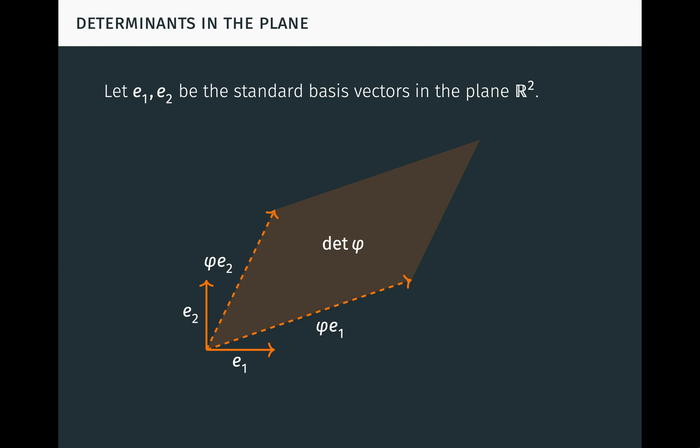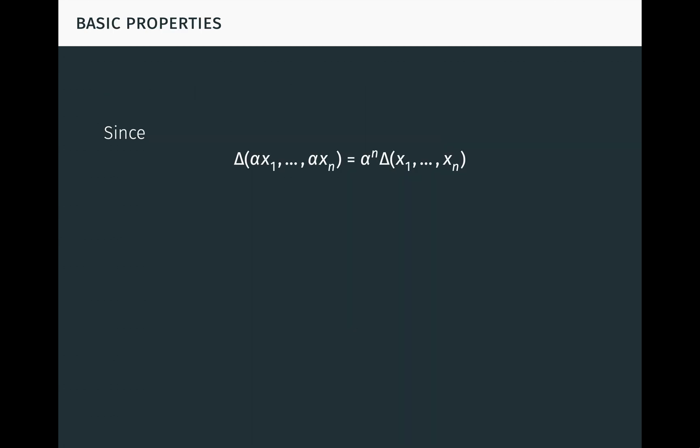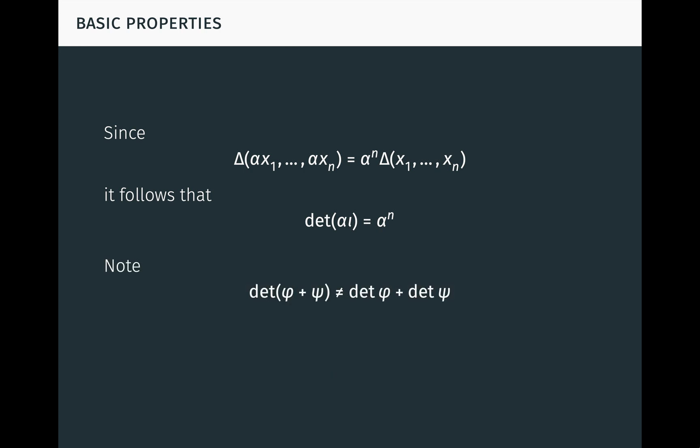We now examine some basic properties. Since delta of (alpha*x1,...,alpha*xn) equals alpha^n times delta of (x1,...,xn) by multilinearity of delta, it follows that the determinant of alpha times the identity transformation equals alpha^n. In particular, the determinant of the identity transformation is 1. This intuitively makes sense thinking of the determinant as an n-dimensional volume scaling factor. Note that the determinant of the sum of two linear transformations is not in general equal to the sum of the determinants, showing that the function det is not linear.